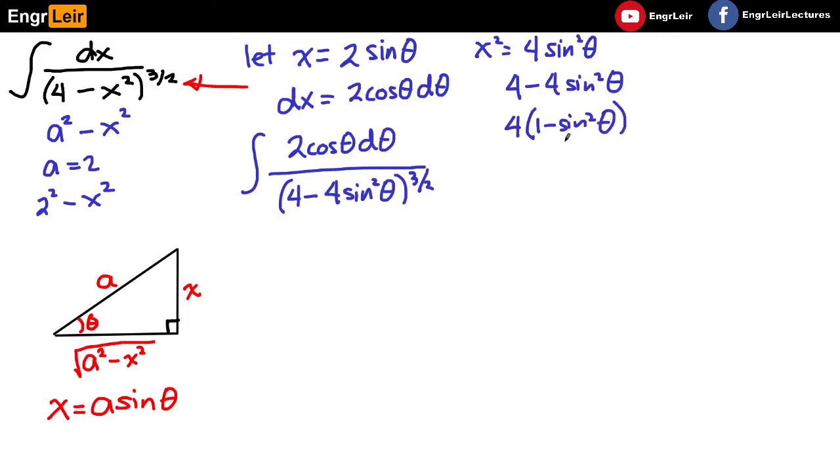Tapos, magiging simple yung buhay natin. Remember, from trigonometry, yung 1 minus sine squared theta is also cosine squared theta. 1 minus sine squared theta equal yan sa cosine squared theta. So, yamitin natin siya doon.